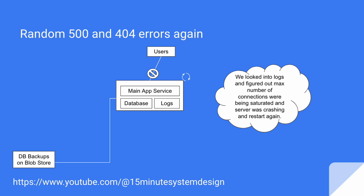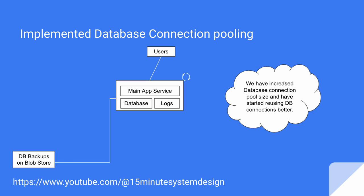After some time, when we face the same issue again, we check the log file and find out we were having issues with database connections — either some clients were not closing connections properly, or the maximum number of connections was being saturated. To handle this, we implemented database connection pooling, which keeps connections open and reuses them rather than creating a new connection every time. We also increased the maximum connection size in the database config settings.